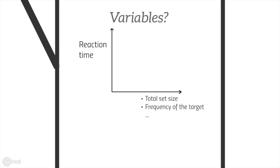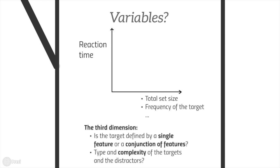The way that the dependent and independent variables relate to each other can also be influenced by a third-dimensional variable, such as the number of features that define the target and the complexity of the stimulus objects.